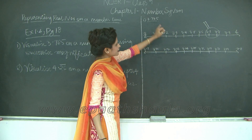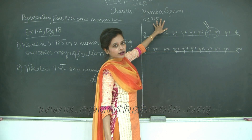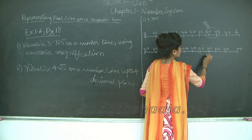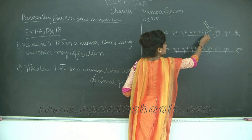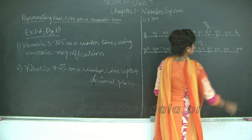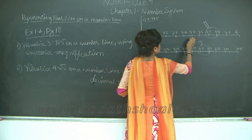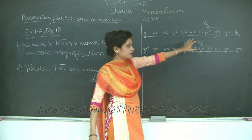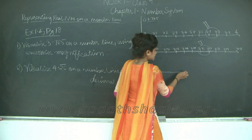Now we need to plot 3.76, so my 3.76 is here, but I won't stop here. I will magnify this section because I need to further locate 3.765 — that is the digit 5 after 0.76. So let us go ahead and magnify the section between 3.76 and 3.77. I mark the magnifying glass with dotted lines between these two intervals. So 3.7 is here and 3.8 is here, which means I have magnified the section 3.7 to 3.8.